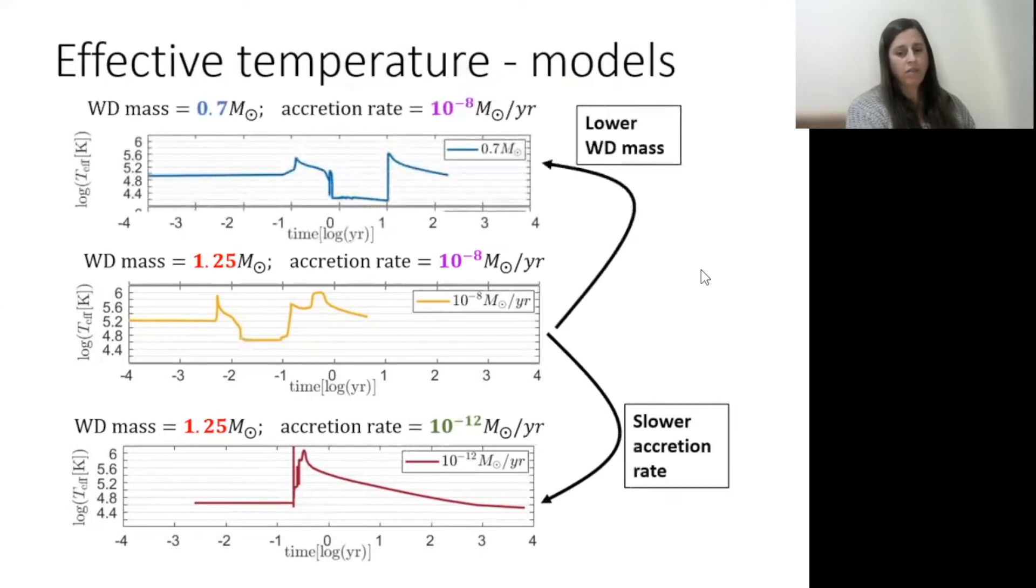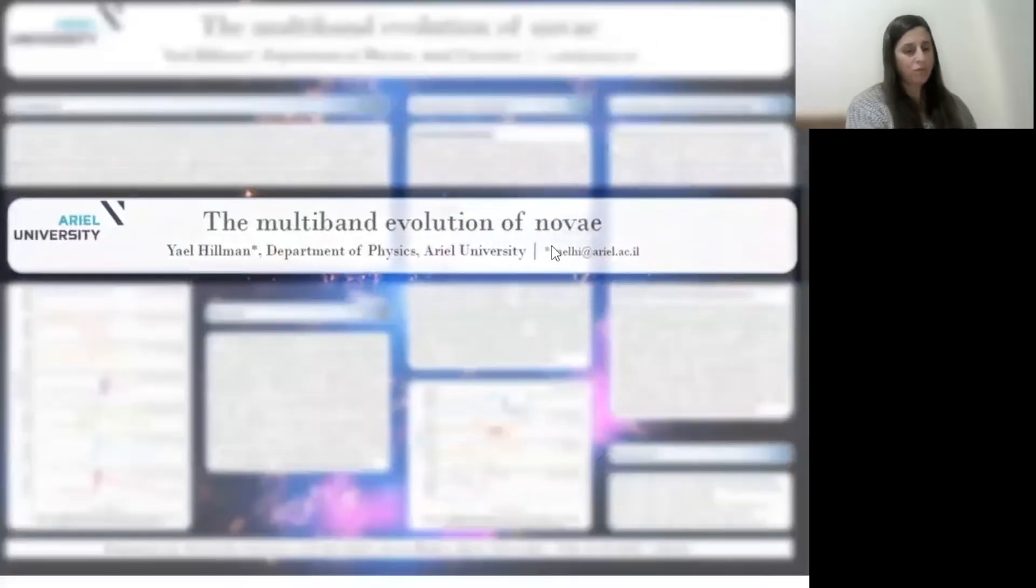This implies that long epochs of simultaneous multiband observations could help build a time-dependent temperature curve for any system that produces novae. Combining the data with models of temperature curves could help identify basic parameters to define the system: the white dwarf mass, the accretion rate, and the time between eruptions. There's more details in my poster, and feel free to contact me.